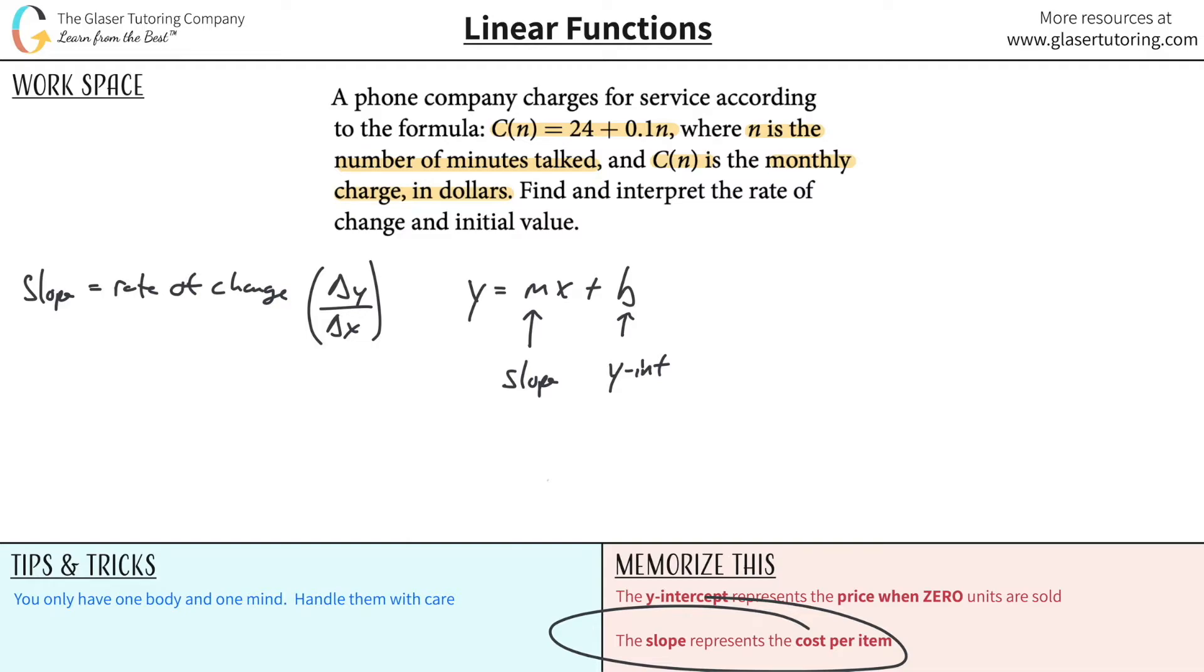Now, in terms of this problem, they want to find and interpret the rate of change and the initial value. So basically, that is what's going to represent the cost of an item, where n is the number of minutes talked.